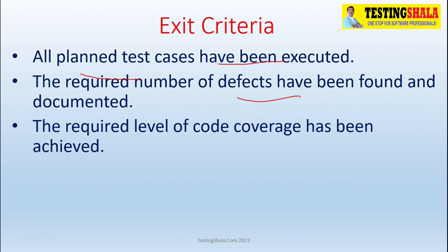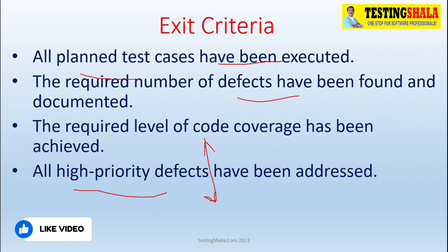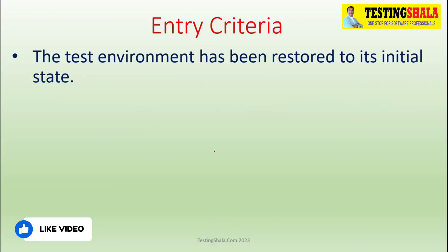The next exit criteria is code coverage — enough code coverage should be achieved, whether for unit testing or system testing. Our test cases should be good enough to cover complete code coverage. The fourth exit criteria is that all high-priority defects — severity one and severity two — are fixed and addressed, so the testing team can certify the product.